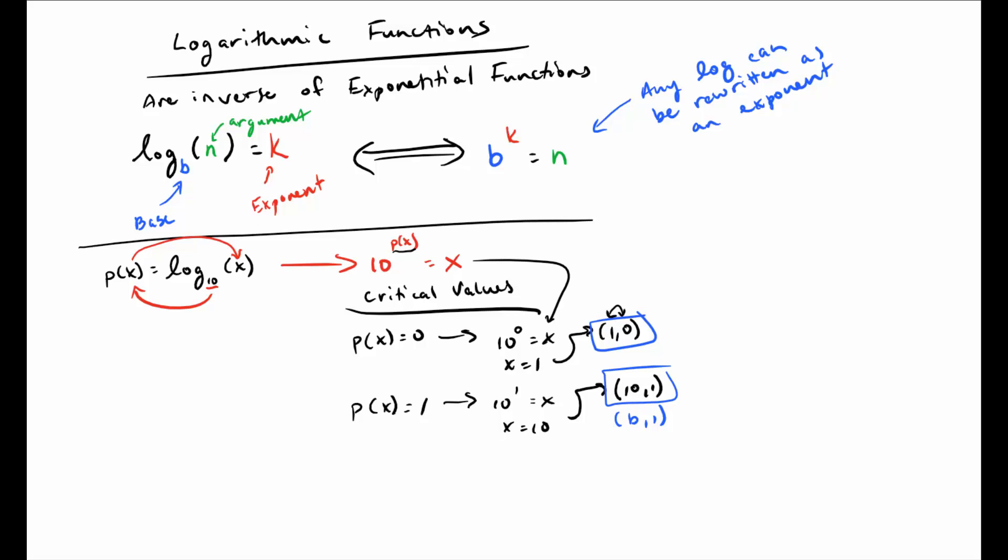We also know that the result here, 10 to the p of x, will always be positive. So we know that 10 to the p of x will always be greater than 0, which means x, since x is equal to 10 to the p of x, will also be always greater than 0.